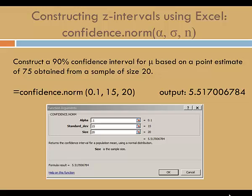Sigma is 15, and n is 20. The output is the margin of error, 5.517 or approximately 5.5. This is the same margin of error that we find using the formula.